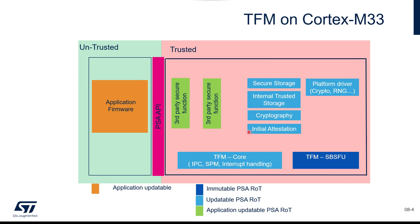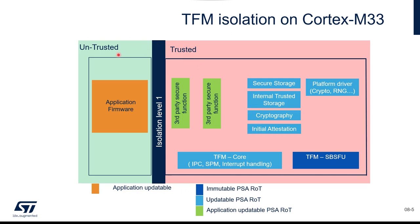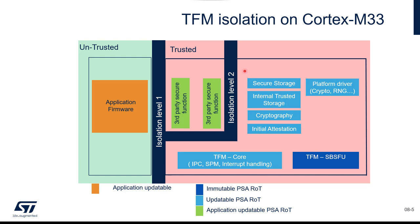PSA defines three levels of isolation. Level 1 is isolation between secure and non-secure. Isolation level 2 adds isolation between what is defined by TFM or PSA and what is available for a third party. Level 3 is isolation between the different third-party functions. Today, TFM only supports isolation level 2, and on the STM32L5 we also use isolation level 2. Important warning: there is no link between certification level and isolation level — this causes confusion sometimes.